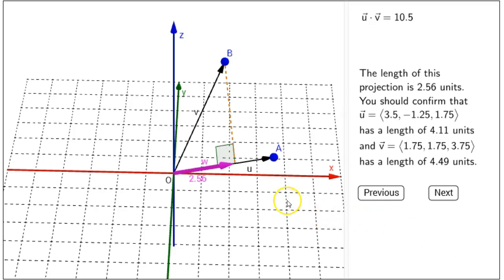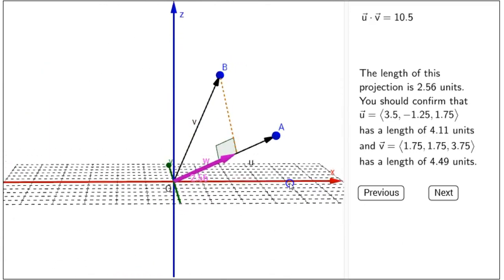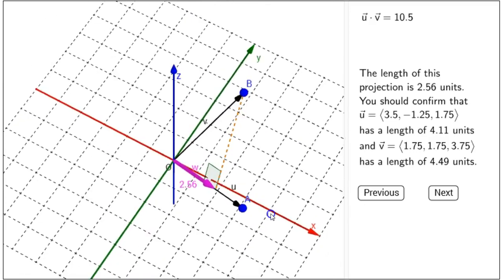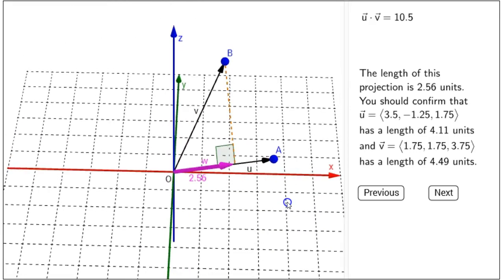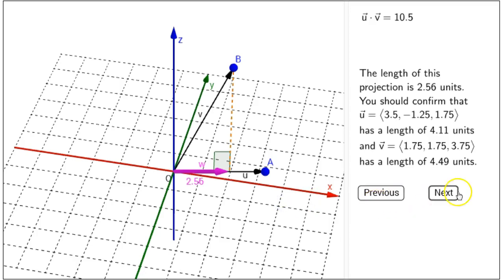Now, when you play with the interactive figure, to confirm this, you can just move the three-dimensional view around and get a rough estimate for the coordinates of points A and B. And then remember that the length of a vector is the square root of the sum of the squares of the coordinates.